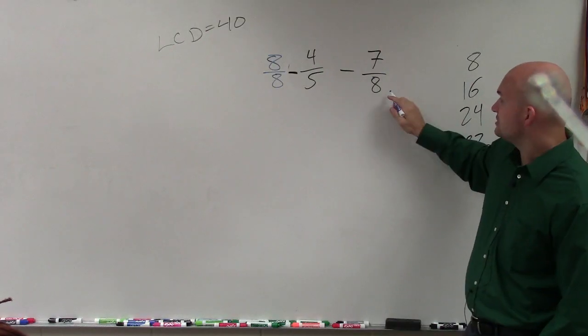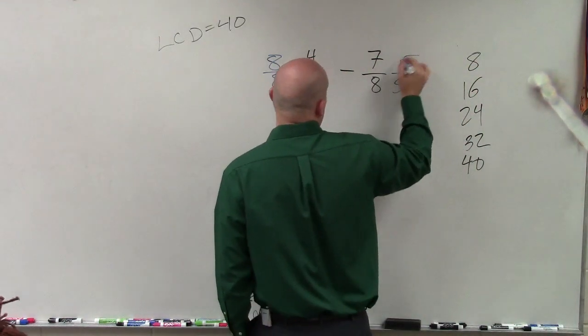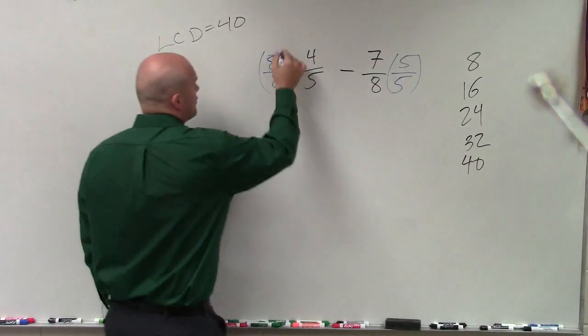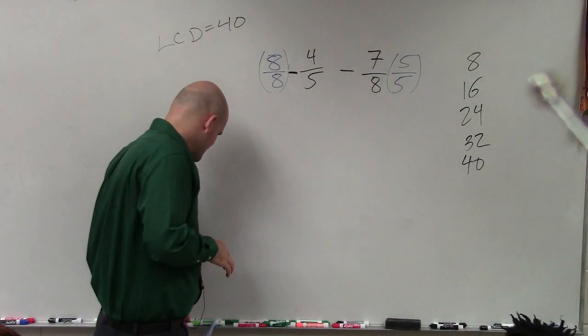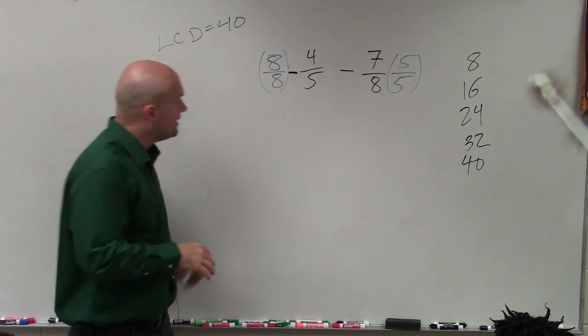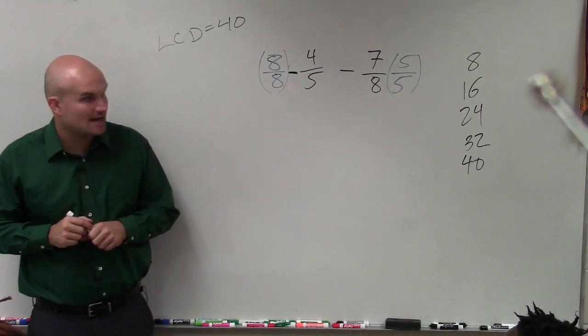Same thing over here. To get to 40, I need to multiply by 5. To produce an equivalent fraction, I'll multiply by 5 over 5. So now, when multiplying fractions, what we simply do is multiply numerator times numerator, denominator times denominator.